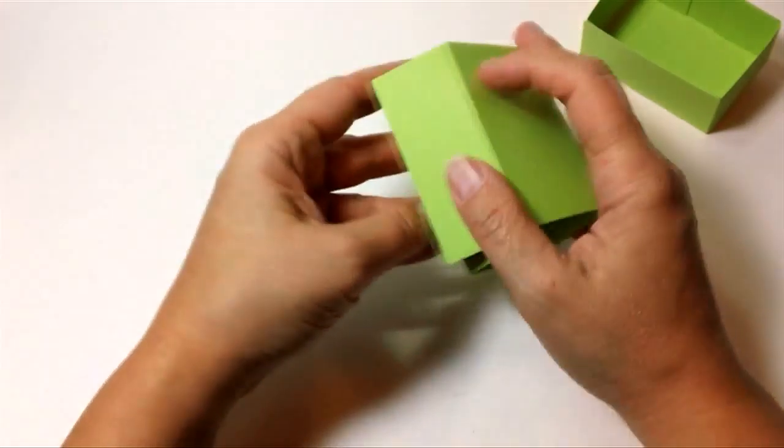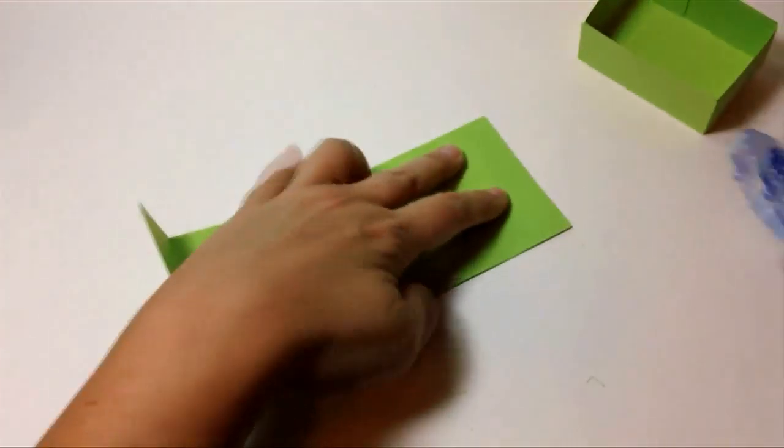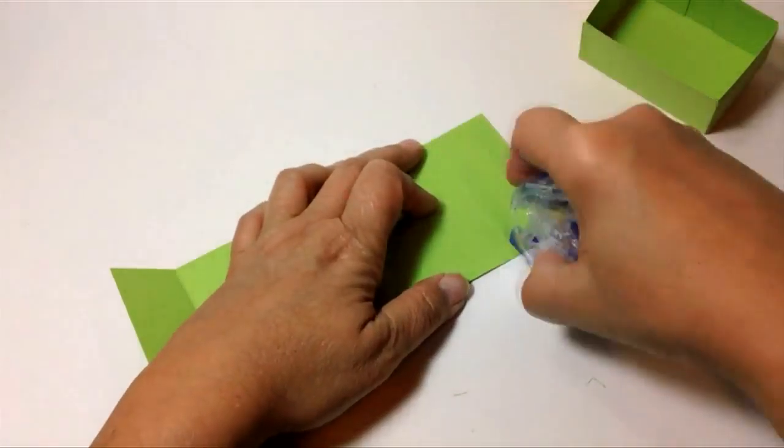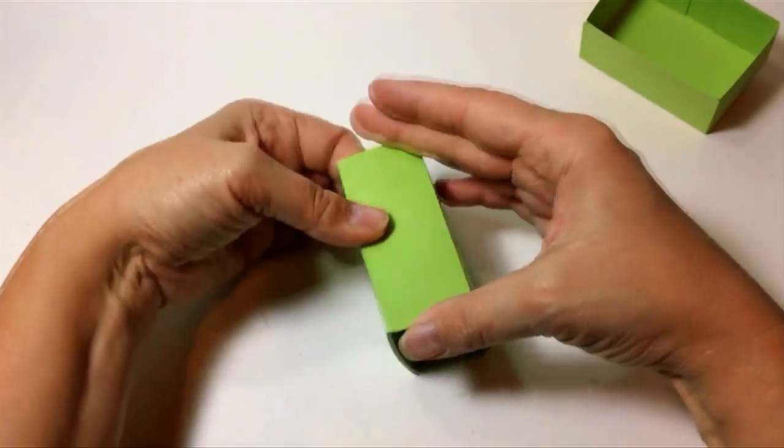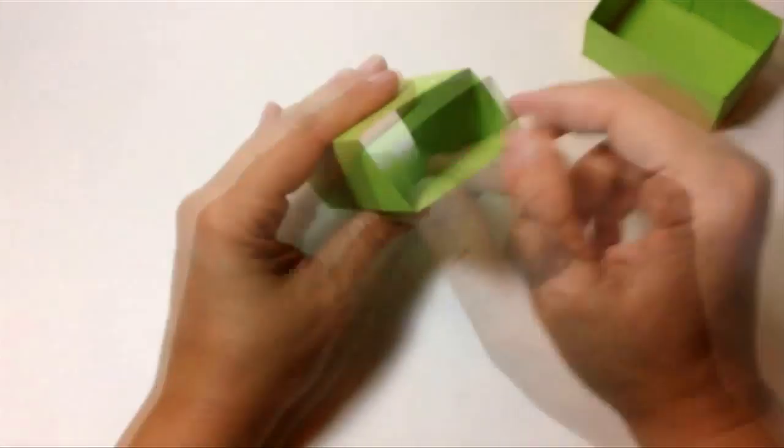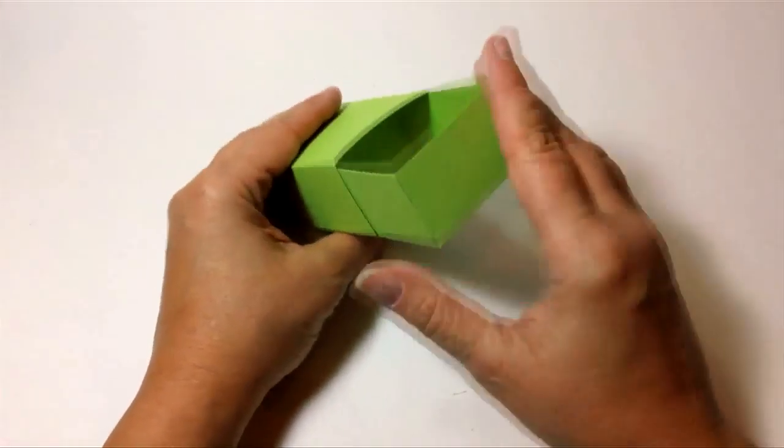Now I'm going to fold the wrapper part, super simple, just along all those score lines, and add some adhesive and press it together. This panel on top is the panel you're going to stick to all the other wrappers on the other boxes to stack the thing together.